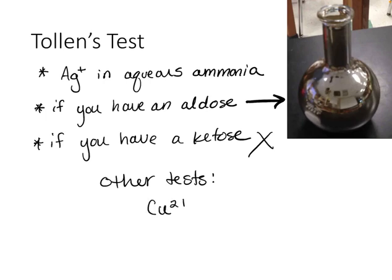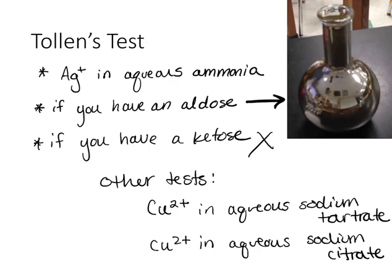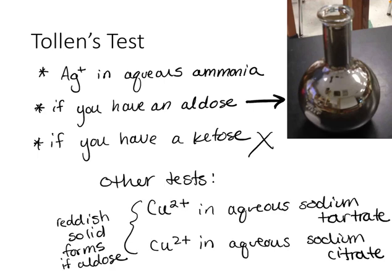A test where you use copper ions in aqueous sodium tartrate, or you can use copper ions in aqueous sodium citrate. Can you guess what color the product will be? You'll get like a reddish solid at the end. So if you have an aldose, you'll get a reddish precipitate.